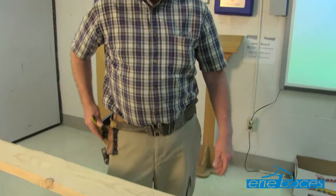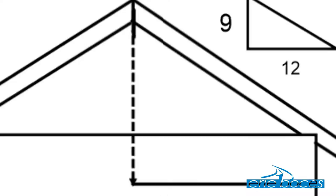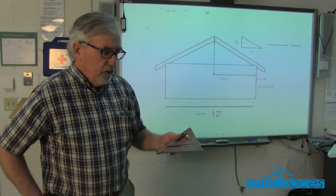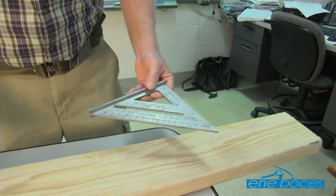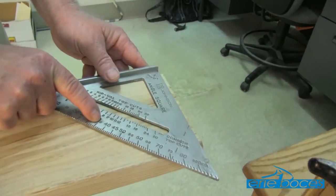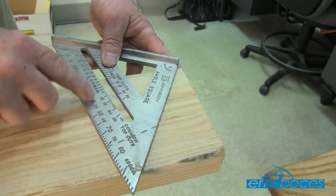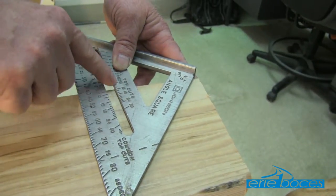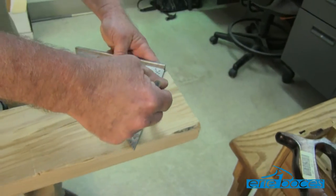The next step is to mark your plumb cut at the ridge board. The plumb cut is the cut that goes straight up and down — perfectly vertical — when the rafter is in position. The easiest way is to use the speed square. Place the flange on the top edge of the board, lay it down on your material, and you have your pivot point. Pivot it until you read 9/12 on your common cut — don't confuse that with the hip-and-valley scale. Then mark your plumb cut along that edge of the speed square.